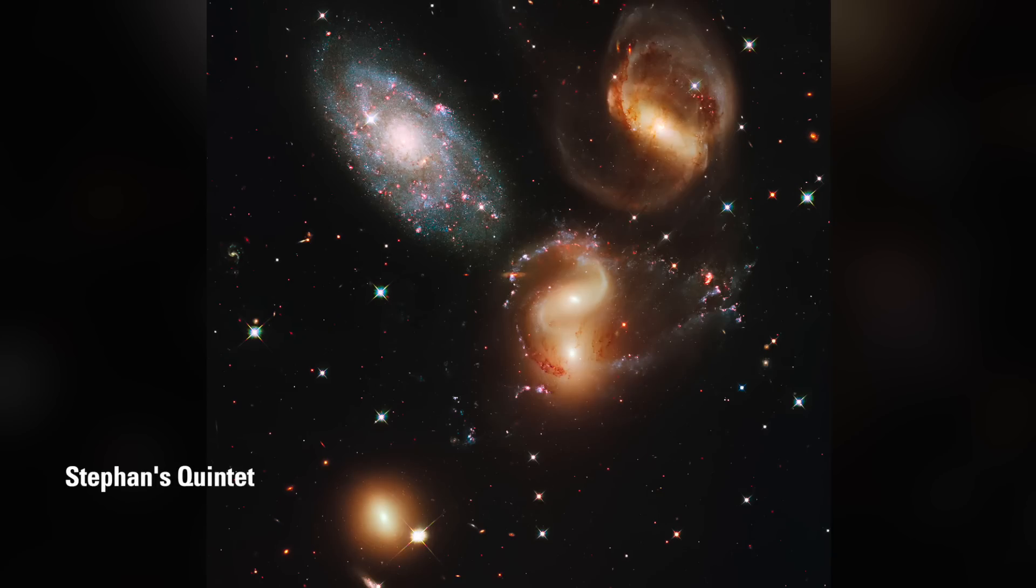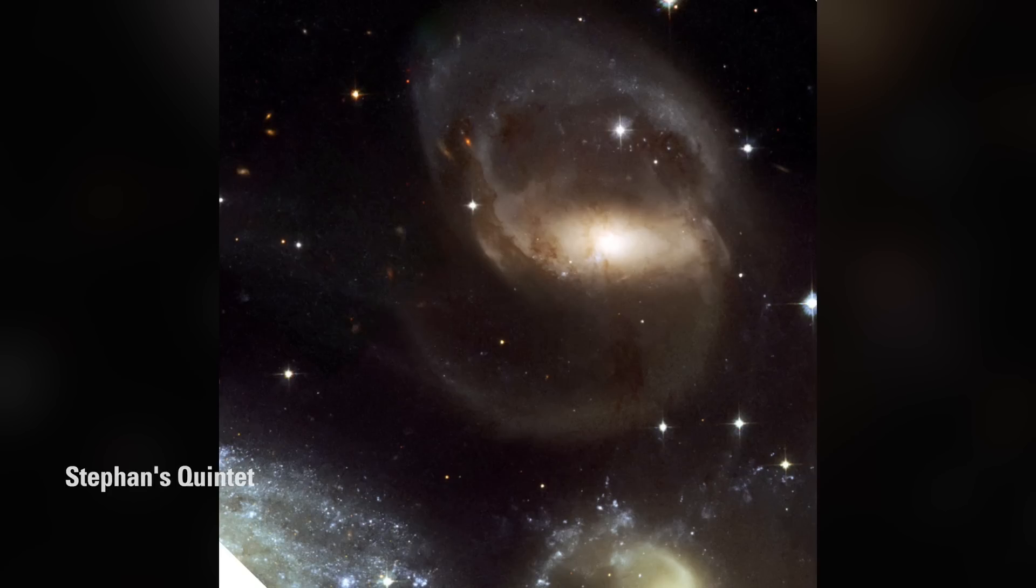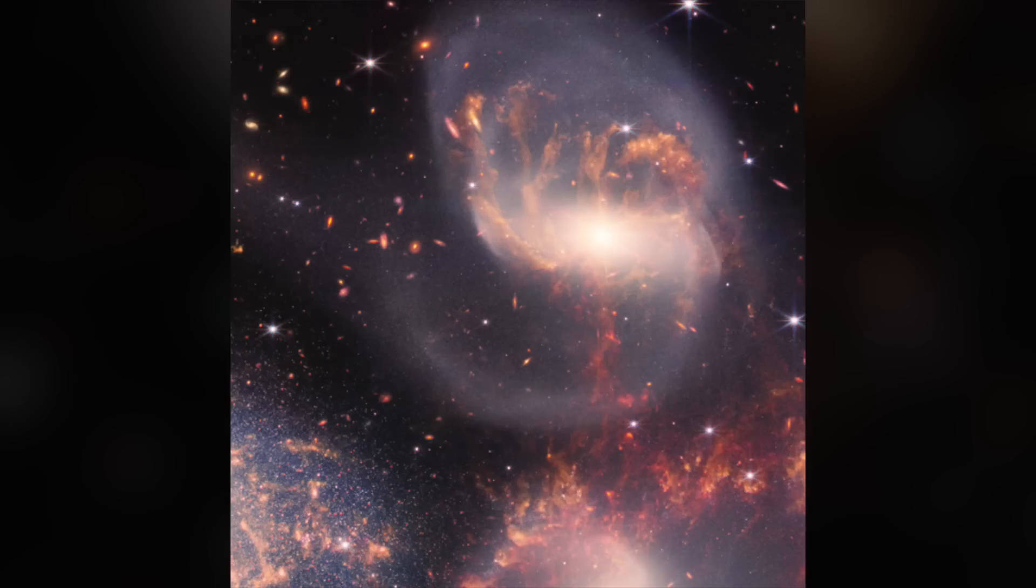Next is Stefan's Quintet. Here's a portion of a Hubble image of Stefan's Quintet showing NGC 7319. There's a suggestion of helically twisted filaments in the dark dust clouds along the left-hand edge of the main body of the galaxy. Again, the visual evidence is debatable. Now, here's the equivalent region from the Webb Space Telescope's MIRI and NIRCAM composite image of Stefan's Quintet.